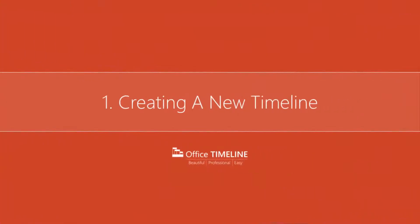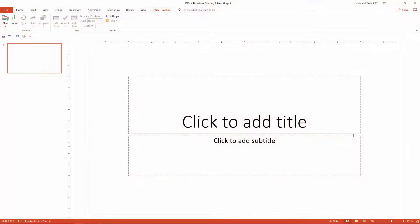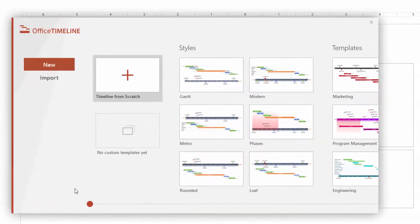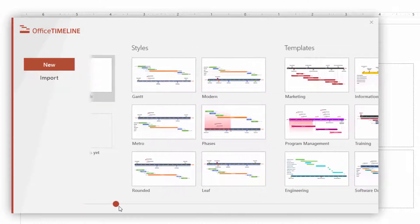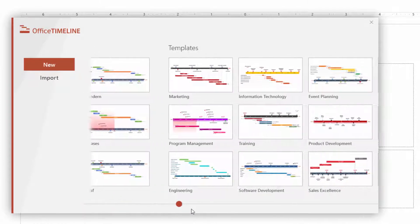To create a new timeline or Gantt chart, simply navigate up to the Office Timeline Plus ribbon tab and select New on the far left. Here in the new dialog box, you have a variety of professionally designed styles and templates to jumpstart your projects.